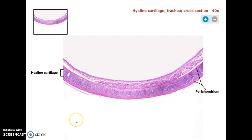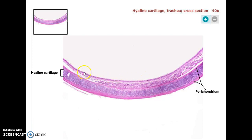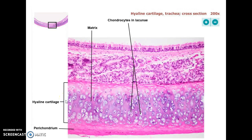Starting with cartilage — hyaline cartilage. This is a cross-section across the trachea, the tube that takes air down to the lungs. The air would be running through here, and this is cutting across the tube. That's that pseudostratified ciliated epithelium on the inner surface of the trachea, but most of the thickness is made up of hyaline cartilage, which we can see more close up in the next slide.